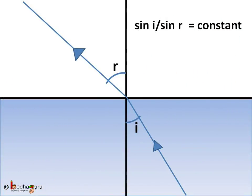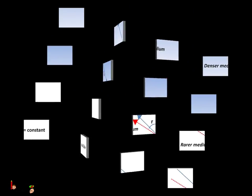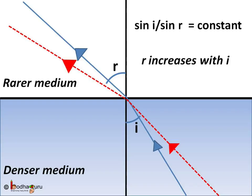From the second law of refraction we know for a given pair of medium sin i by sin r is equal to constant. This constant is known as refractive index. Now when light enters from denser medium to rarer medium it bends away from the normal, as shown by the blue ray.